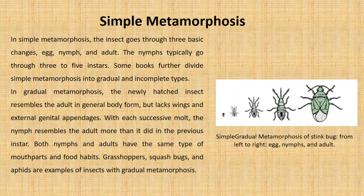Simple metamorphosis: the insect goes through three basic changes — egg, nymph, and adult. The nymphs typically go through three to five instars. Some books further divide simple metamorphosis into gradual and incomplete types. In gradual metamorphosis, the newly hatched insect resembles the adult in general body form but lacks wings and external genital appendages. With each successive molt, the nymph resembles the adult more than it did in the previous instar. Both nymphs and adults have the same type of mouthparts and food habits. Grasshoppers, squash bugs, and aphids are examples of insects with gradual metamorphosis.